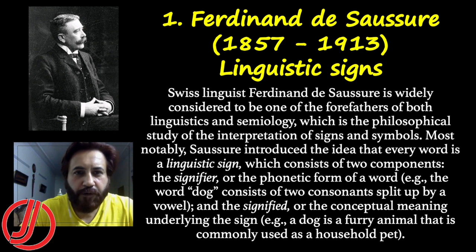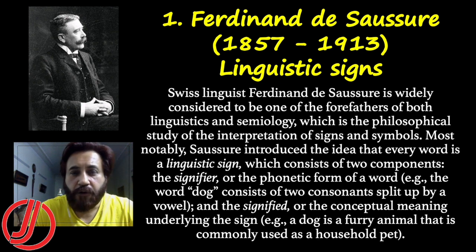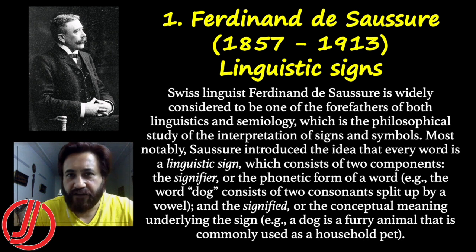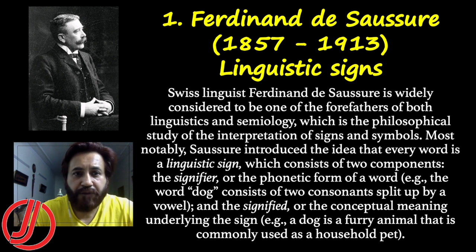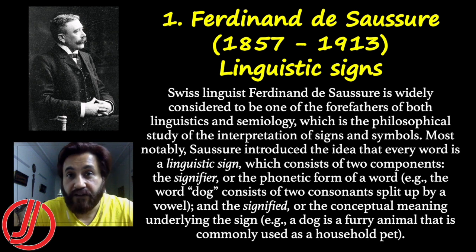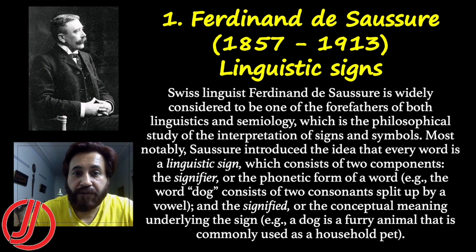First, let's talk about Swiss linguist Ferdinand de Saussure. He was born in 1857 and died in 1913. He talks about linguistic science. His book is 'Course in General Linguistics,' which he didn't publish himself — it was compiled from his lectures by his students. He became the father of linguistics, giving us the philosophical study of signs and symbols.